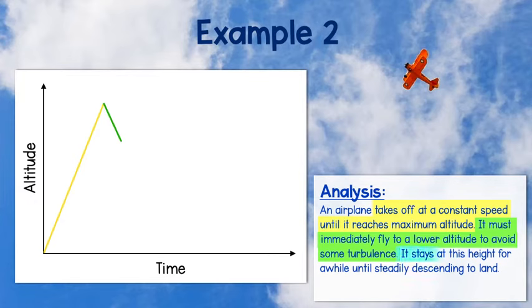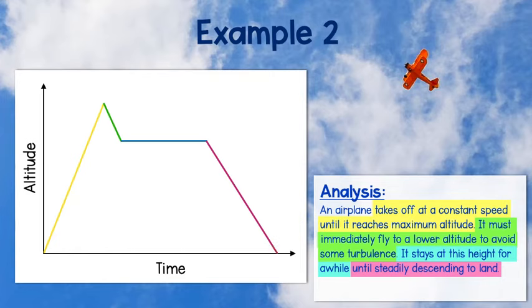Great! Now the airplane stays at this height for a while. This means the plane isn't flying higher or lower, so we can draw a straight line to represent this. Lastly, it steadily descends to land. While descending, the airplane reaches a lower and lower altitude, so we can draw another line that is decreasing until it reaches the bottom.